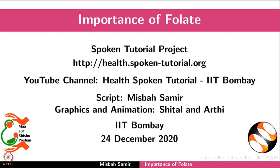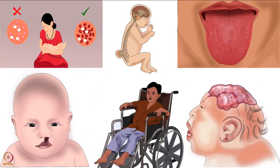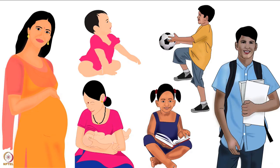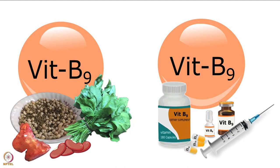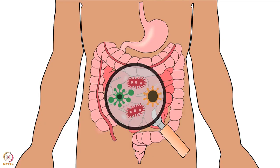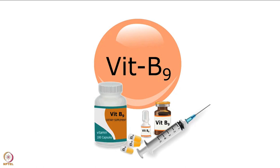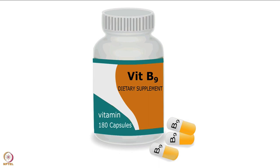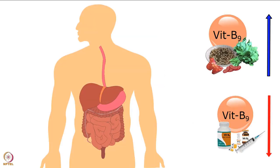Welcome to the spoken tutorial on the importance of folate. In this tutorial, we will learn about the role of folate in the body, effects of folate deficiency, and requirements of folate for different age groups. Vitamin B9 is an important water-soluble B vitamin. It has two forms: folate, the natural form found in foods and produced by bacteria in our intestines, and folic acid, the synthetic form.